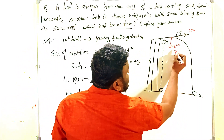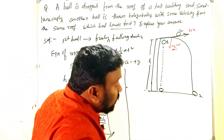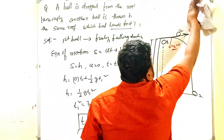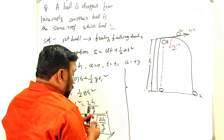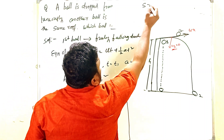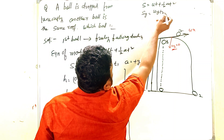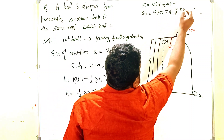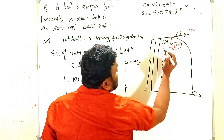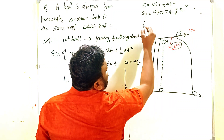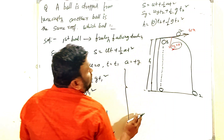Since the vertical initial velocity is zero, we again use s = ut + ½at². For the vertical direction: s_y = u_y · t₂ + ½g · t₂². The vertical displacement is h and u_y = 0, so: h = 0 × t₂ + ½g · t₂², giving h = ½g · t₂².